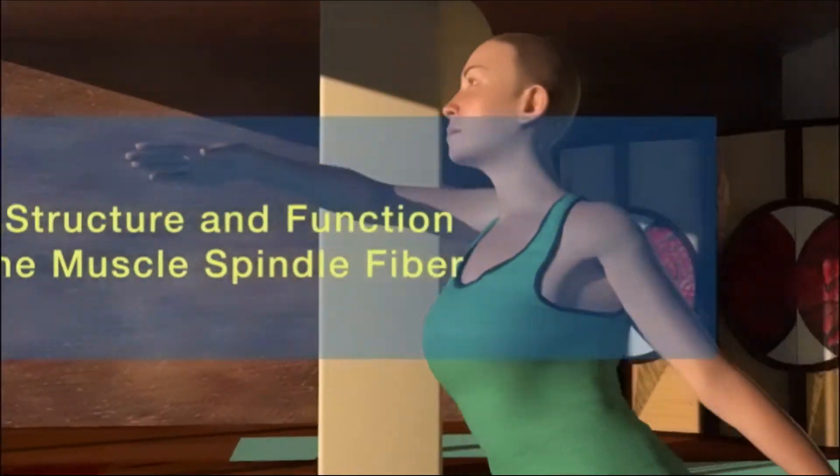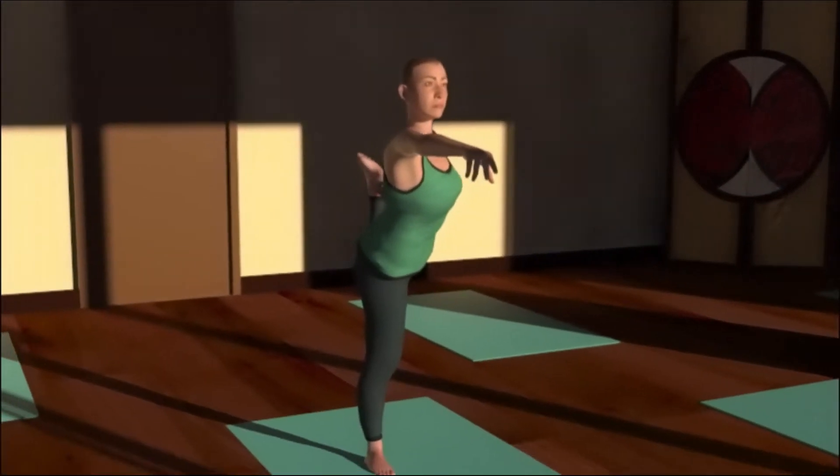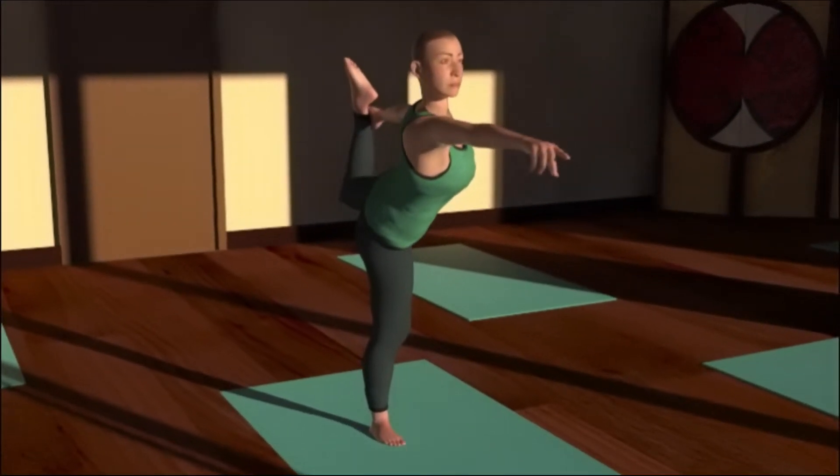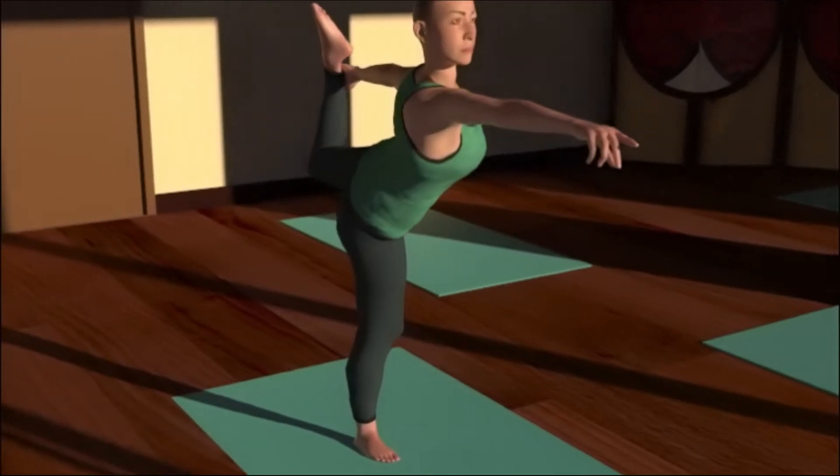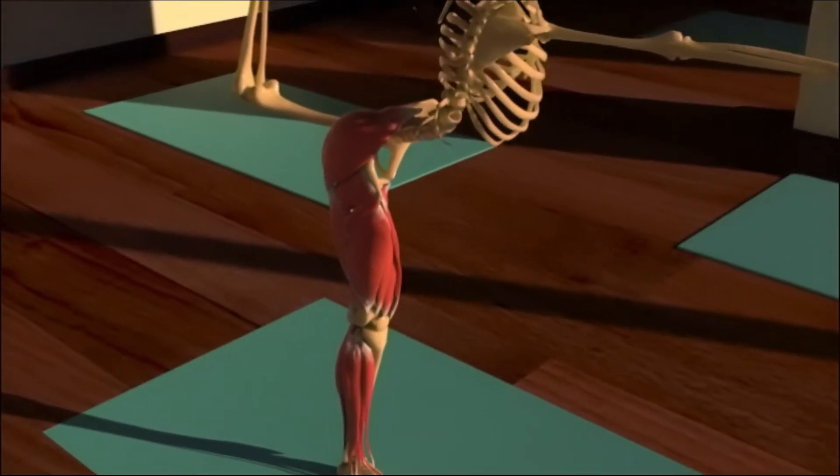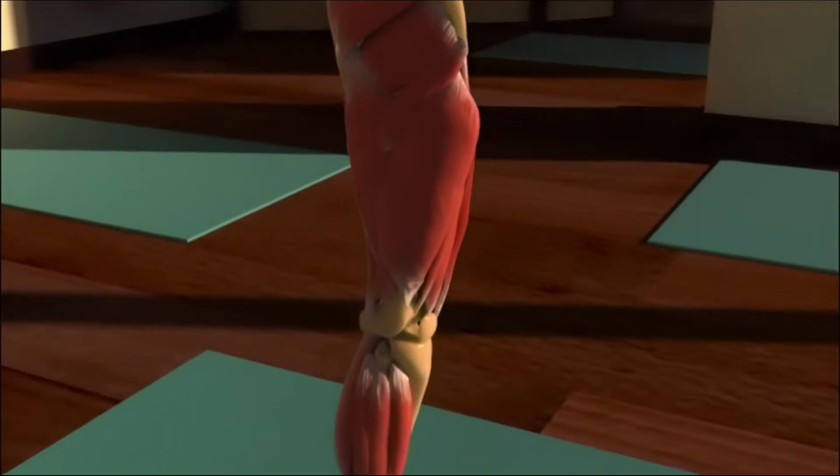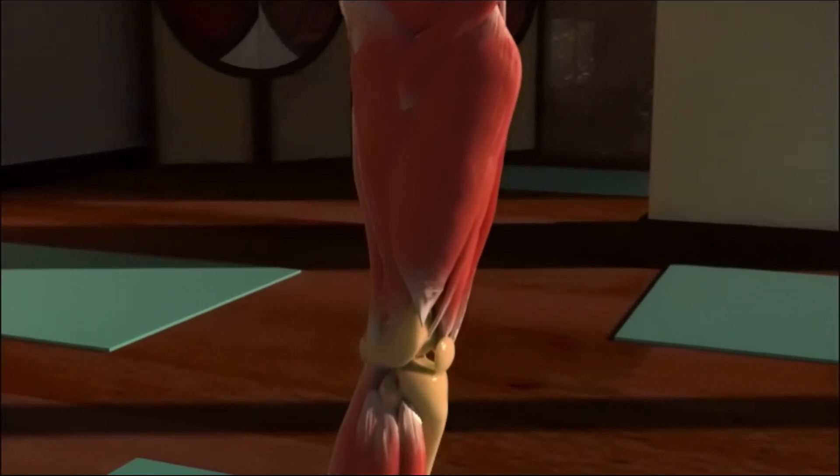Proprioception is imperative in the body's ability to retain balance and posture without conscious effort. In order for the human body to orient itself in space, special sensory receptors called muscle spindles are embedded in the belly of skeletal muscle. These receptors detect changes in length and velocity of stretch.